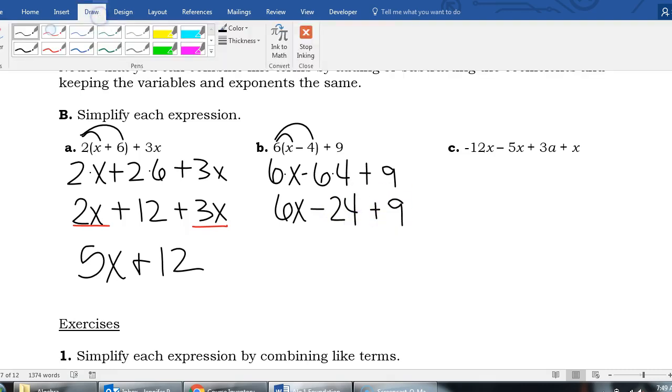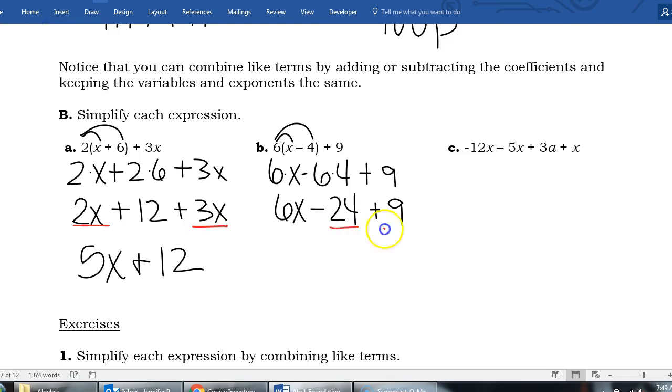Now I'm going to look for some like terms. And I have like terms here and here. My constants are like. They both have no variables. So 6x is going to stay 6x. And then I need to combine a negative 24 and a 9.